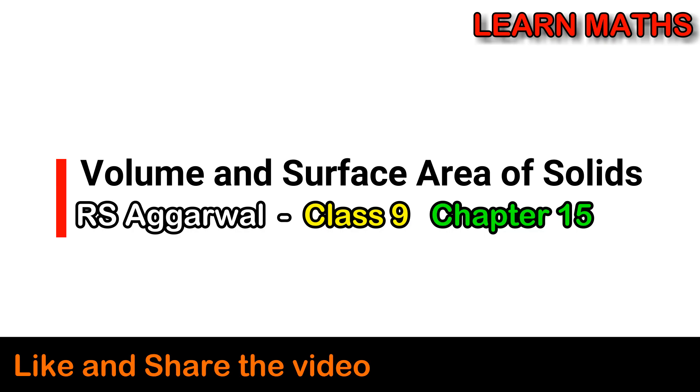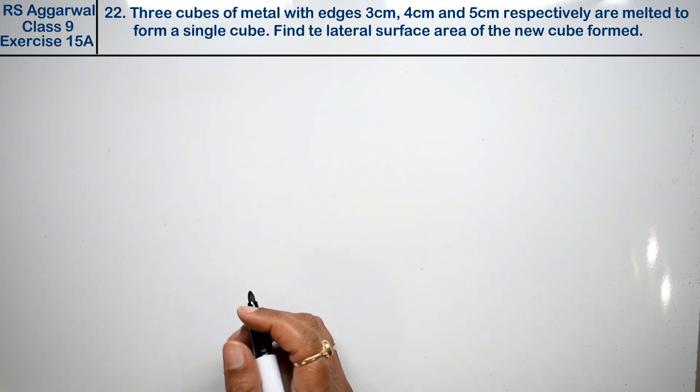Let's do question number 22 of exercise 15a, volume and surface area of solids. The question is: three cubes of metal with edges 3cm, 4cm and 5cm respectively are melted to form a single cube.